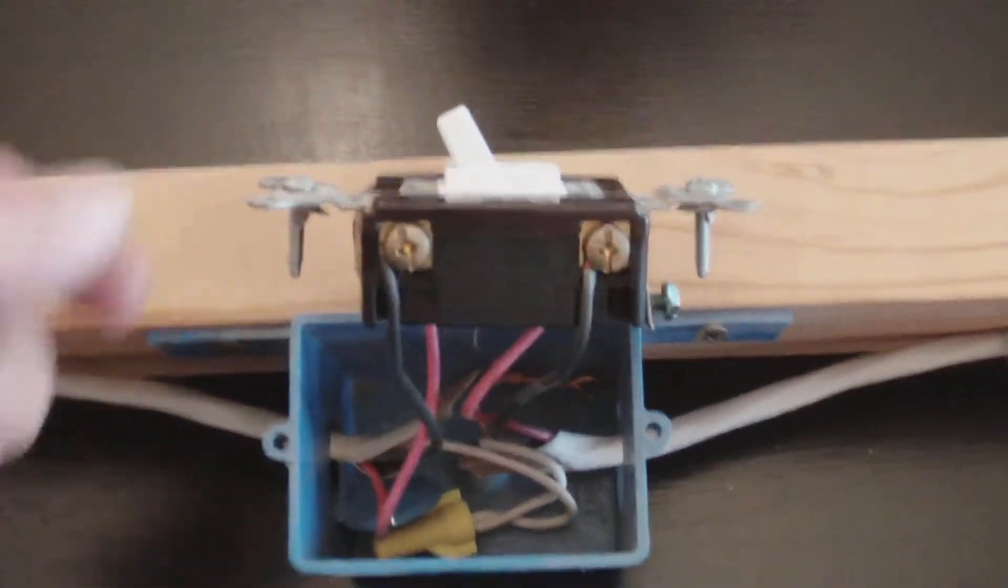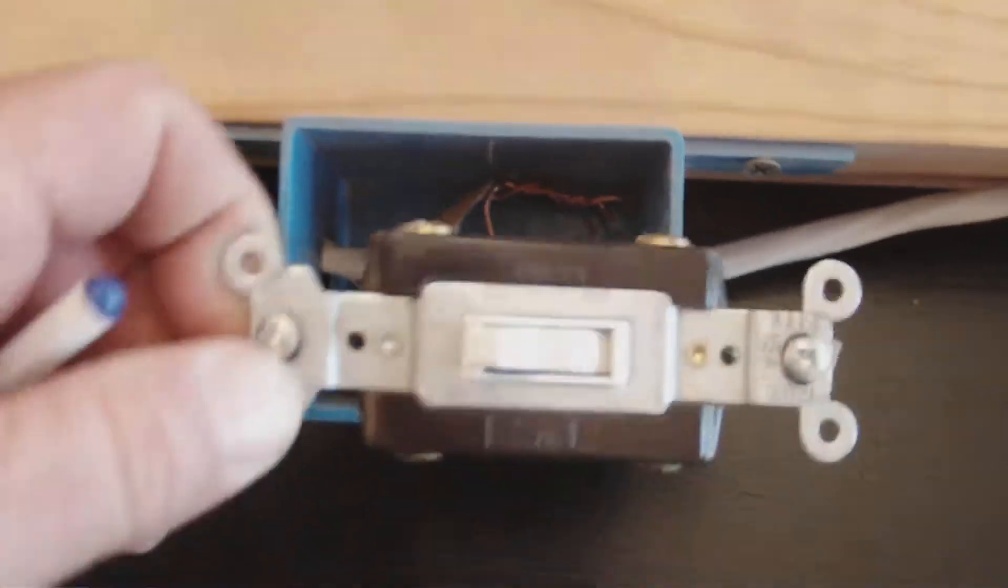You do the exact same thing on the next four-way switch. Two blacks on one side, two reds on the other side. Whites connected together and stuck in the back of the box.